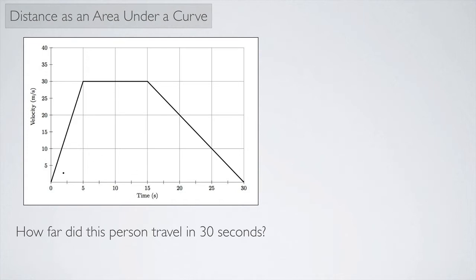So if we want to know from zero to 30 seconds how far the person traveled, we need to find this area under the curve. And the best way to do that is to divide it up into shapes that are familiar.